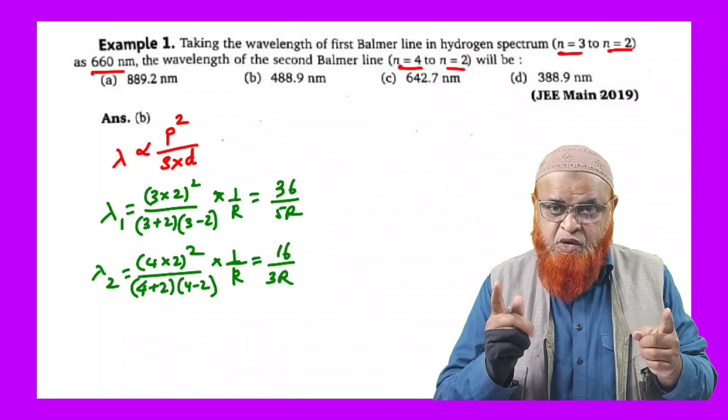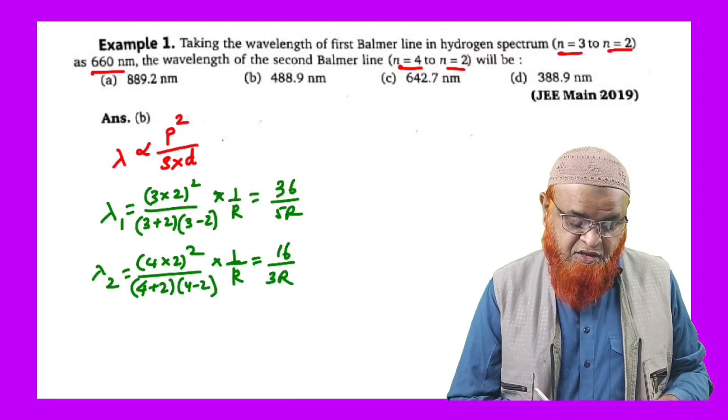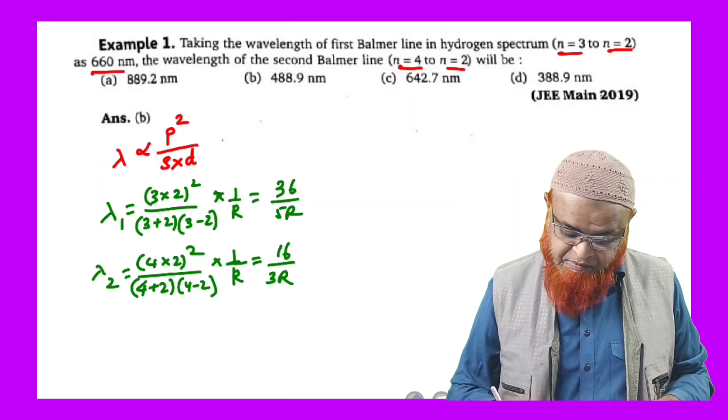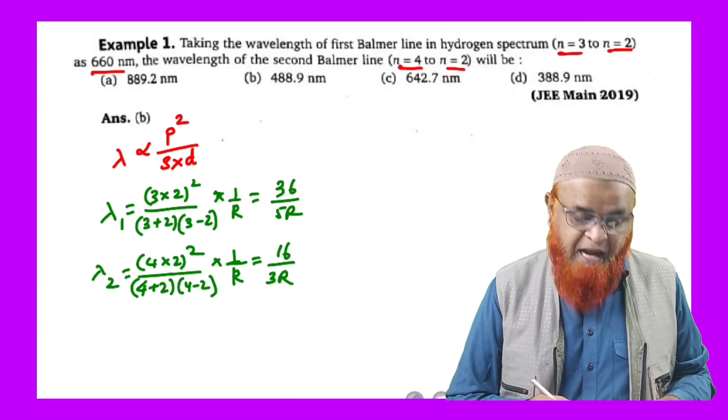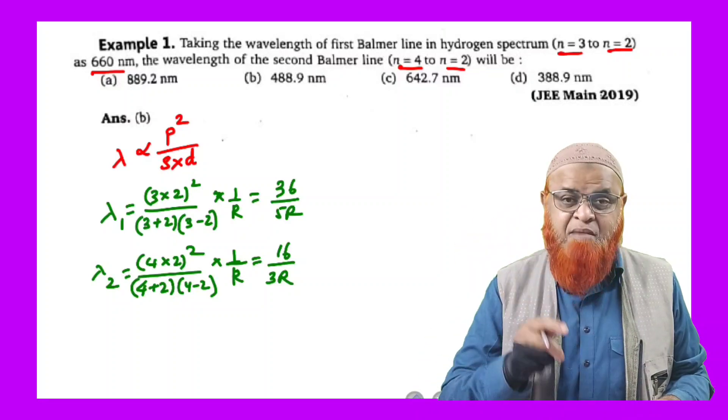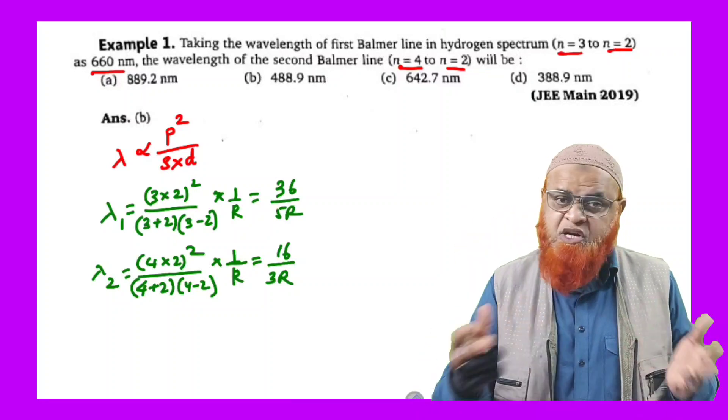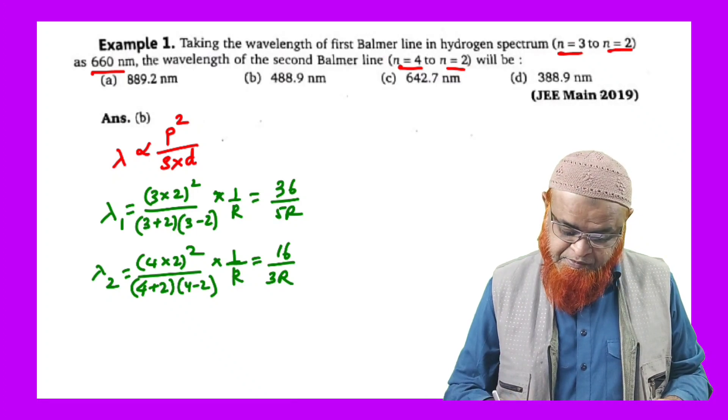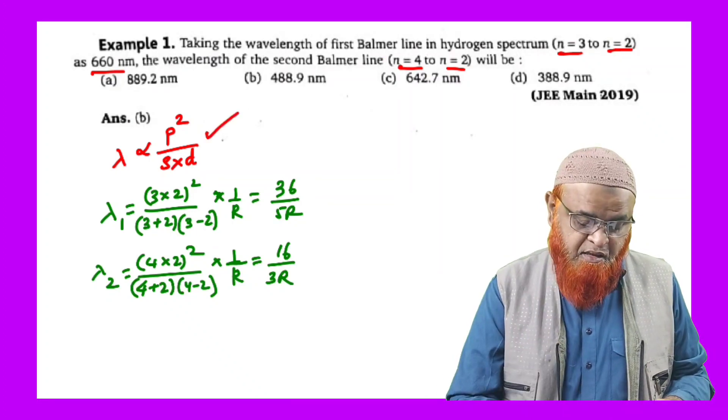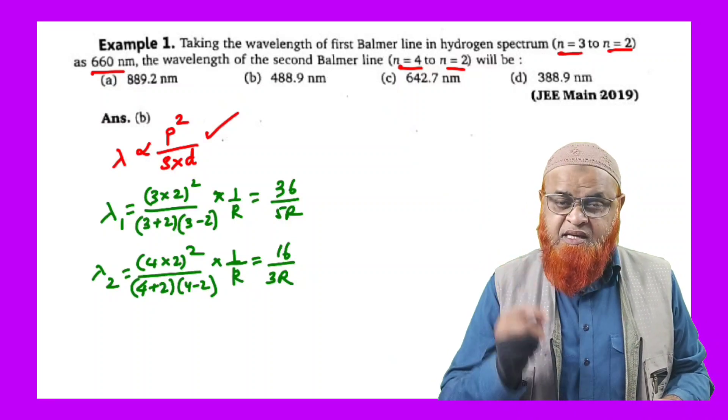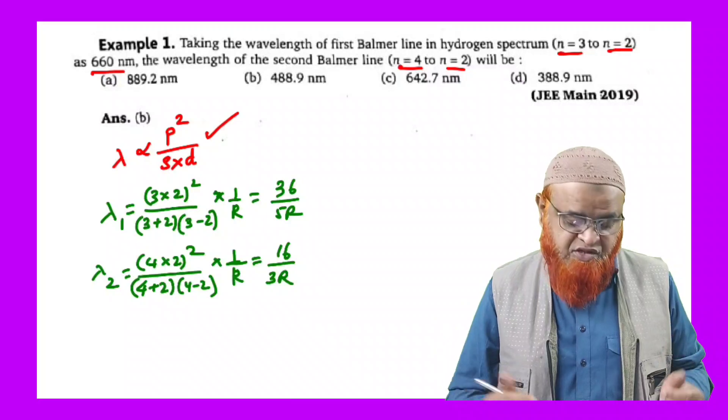I am going to give you a shortcut method here. Lambda is directly proportional to product of the two numbers whole square divided by sum of the two numbers into difference of the two numbers. So lambda is directly proportional to P square by S into D, where S means sum and D means difference.